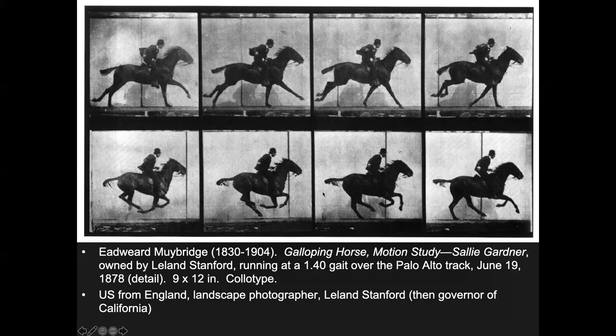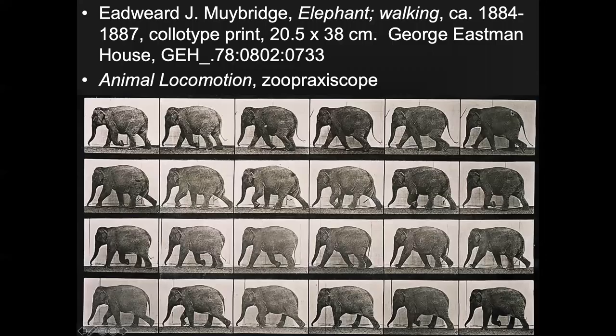Whether Stanford won or lost the bet, he gave Muybridge more money to keep using the technique. Scientists loved it because they could study things by stopping motion in a way they couldn't before — this was before video. Muybridge produced an entire book called Animal Locomotion and called his camera a zoopraxiscope, which literally means 'looking at animals.' Interestingly, the book wasn't necessarily laid out in strict scientific order, so in a way it ended up being almost artistic even though he meant it to be scientific.